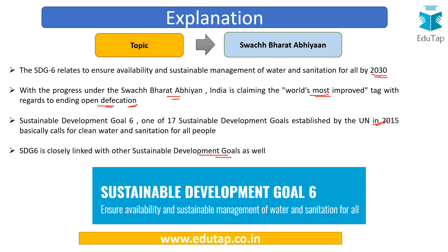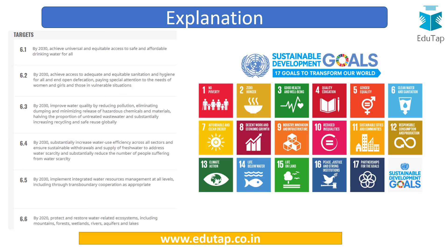SDG 6 is dedicated to water and sanitation but is also linked to other SDGs such as health, sustainable cities, and a clean environment. Have a look at the targets under SDG 6 on screen. You don't need to memorize them — just have a fair idea. Here are all 17 SDGs: SDG 1 is no poverty, SDG 2 zero hunger, SDG 3 good health — go through them once.